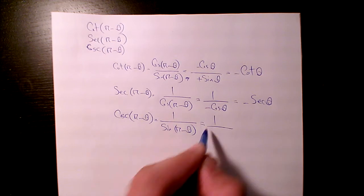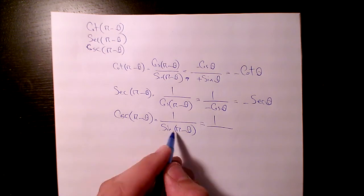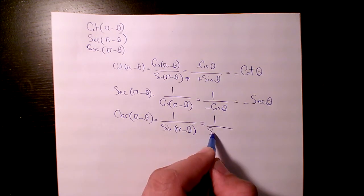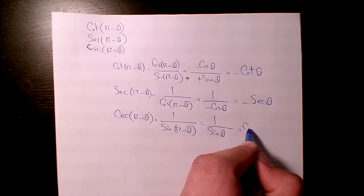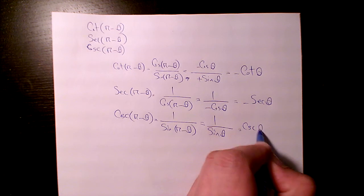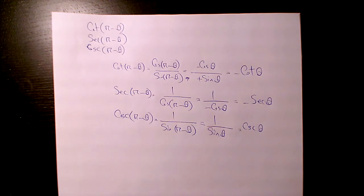And at the end we have csc(π - θ), which will be equal to the inverse of sine, and the sine is going to be equal to sin θ, so that will be equal to csc θ.